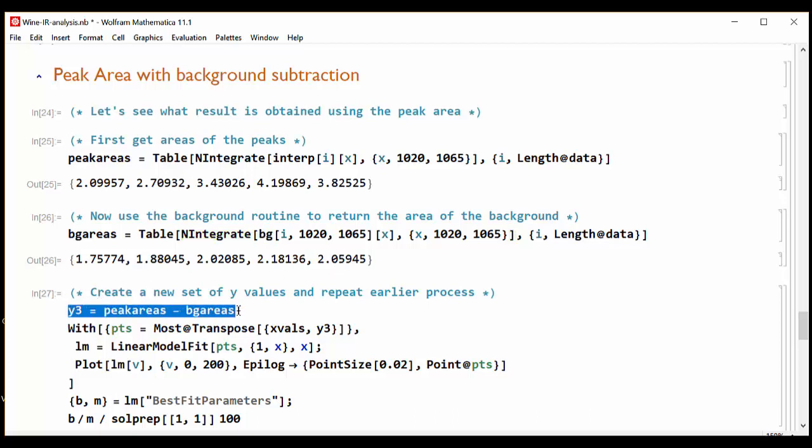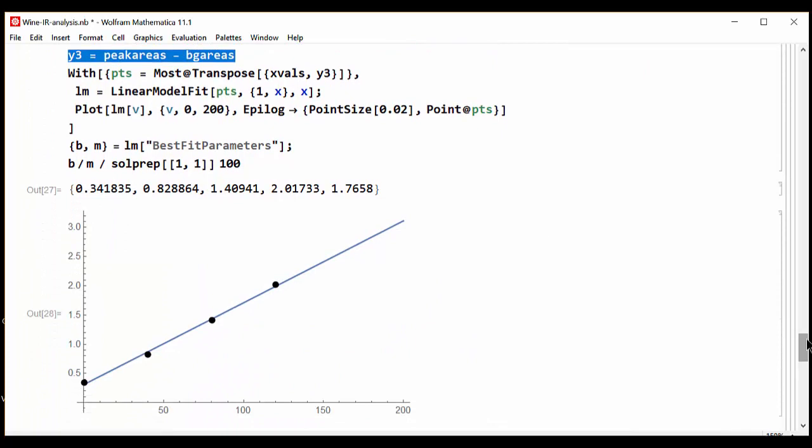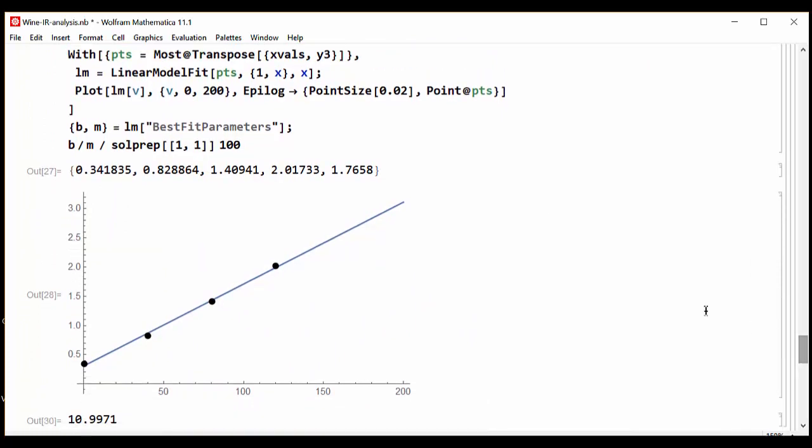Subtracting those two gives us our new set of Y values. Again we crunch the numbers, create a linear model, plot that model, extract the best fit parameters, use the best fit parameters to get a concentration.